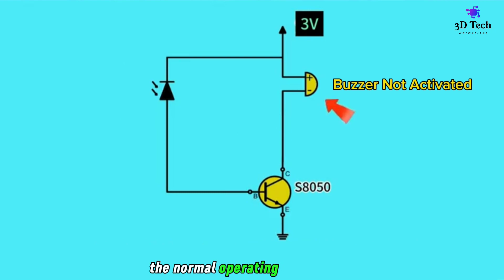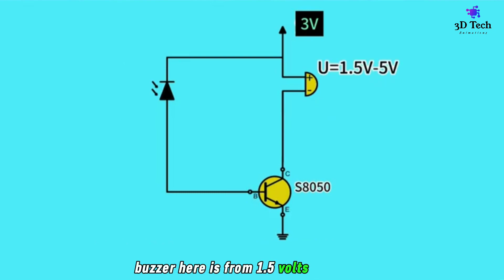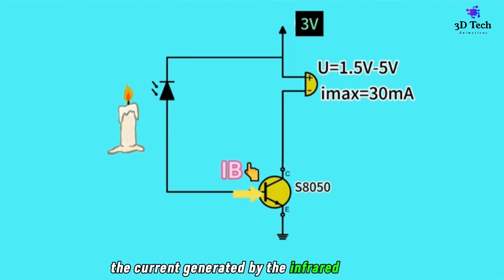The normal operating voltage of our buzzer is from 1.5 volts to 5 volts, with a maximum current equal to 30 milliamps. When a flame is created, the current generated by the infrared receiver will increase. This transistor increases due to the active inflow of current.